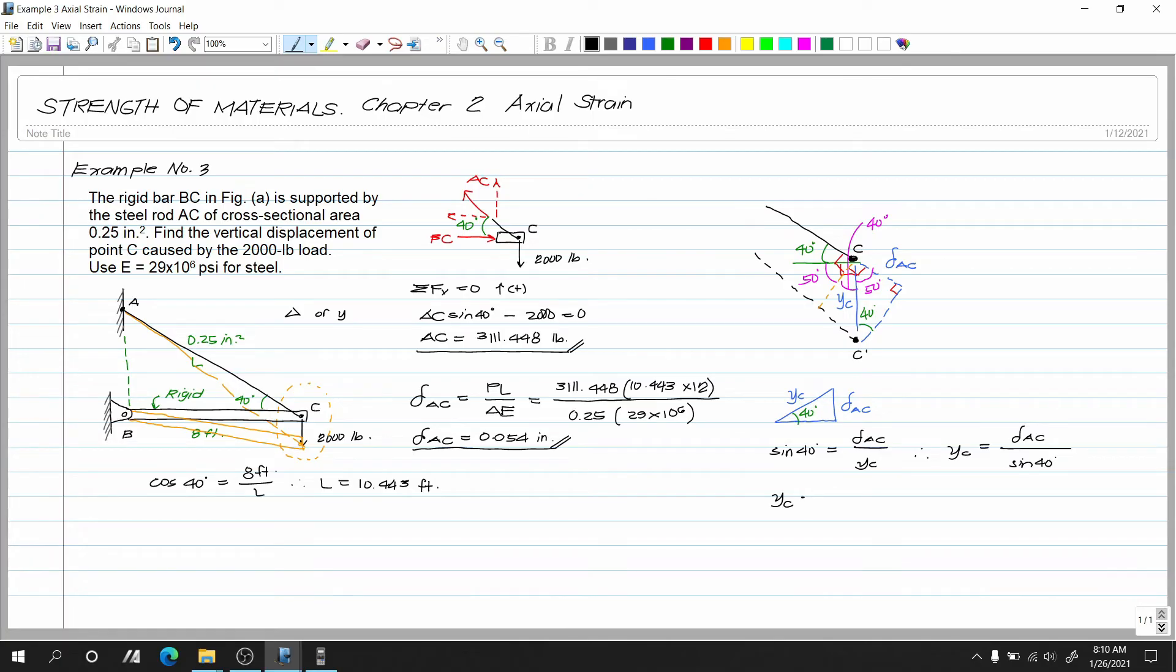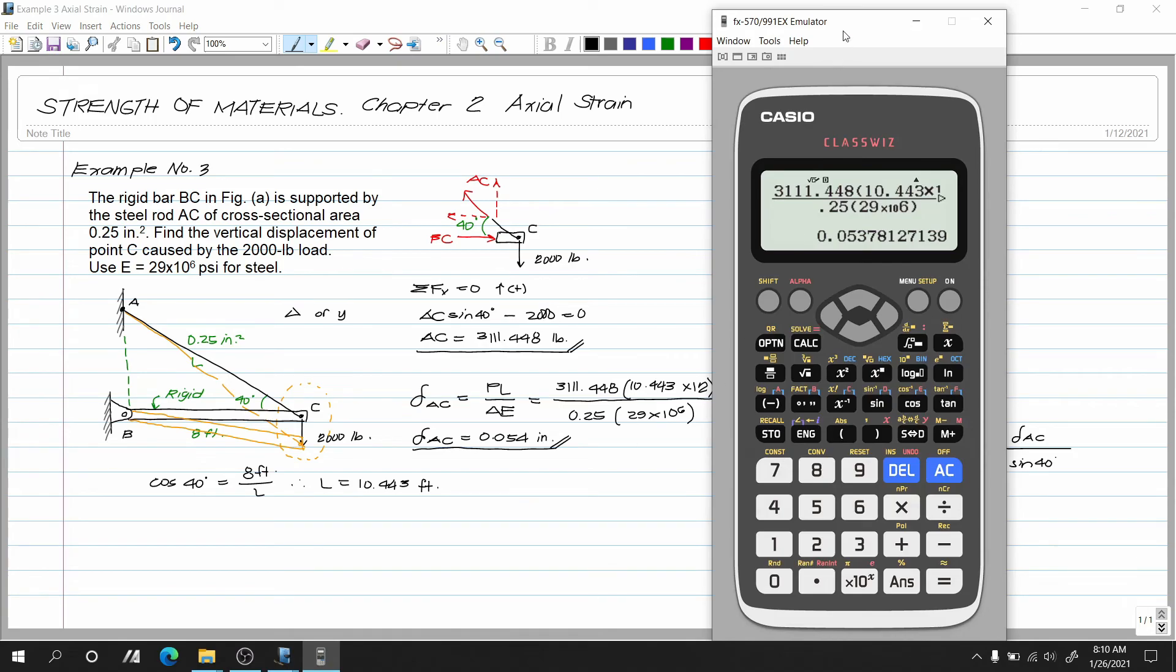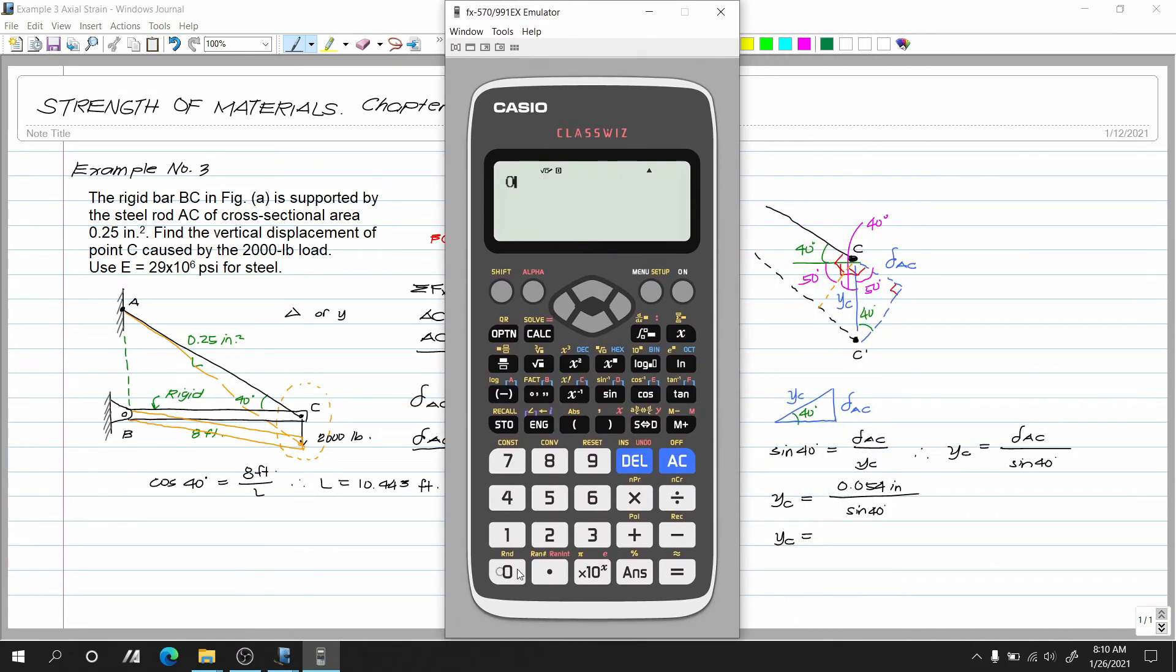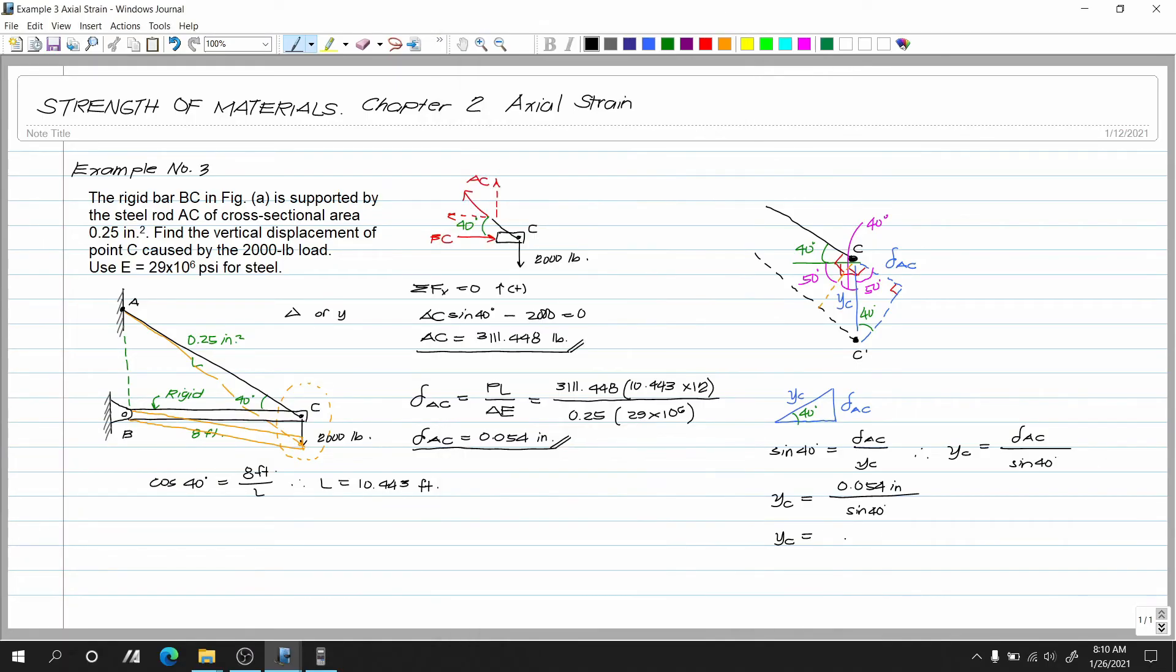Kaya yung ating YC is equals to yung deformation natin. So 0.054 inch over sine of 40 degrees. Therefore ang ating deformation at displacement at C equivalent to 0.054 over sine of 40 degrees. So 0.084 inch yung ating displacement at C.